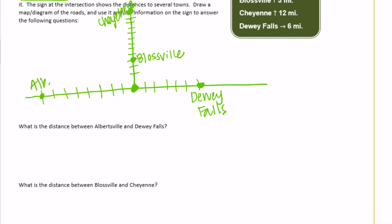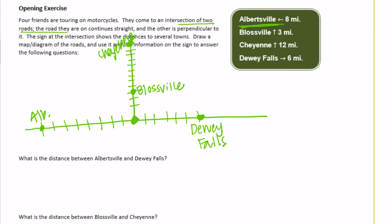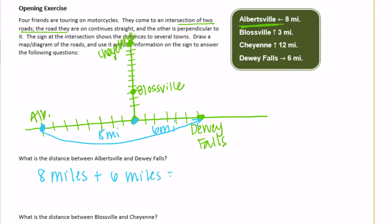The first question asks: what is the distance between Albertsville and Dewey Falls? The distance from Albertsville to the origin was 8 miles, and the distance from the origin to Dewey Falls was 6 miles. So 8 miles plus 6 miles is equal to 14 miles.